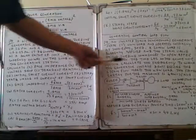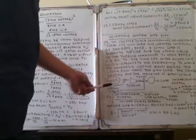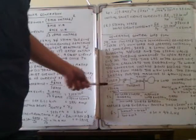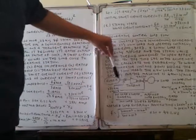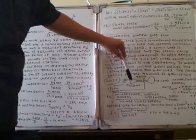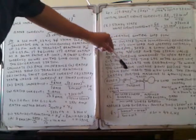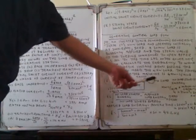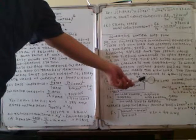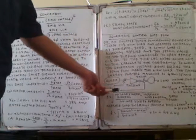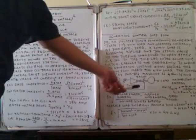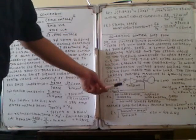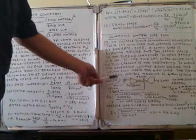In the generator system, the boiler produces steam which passes through the turbine. The turbine rotates and drives the generator. The governor controls the steam valve based on speed deviation. This is the steam valve control system.